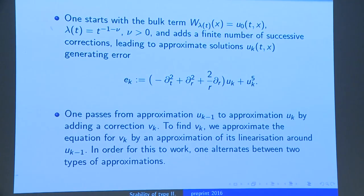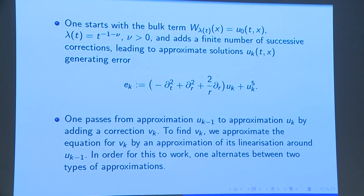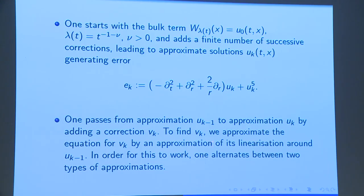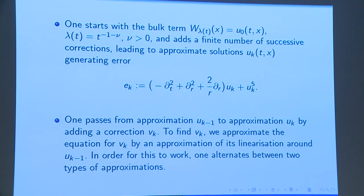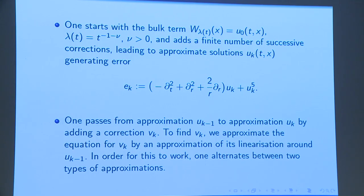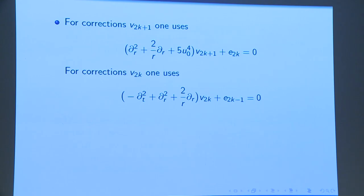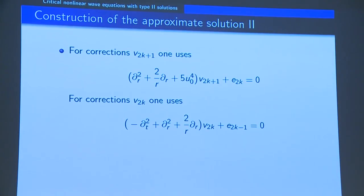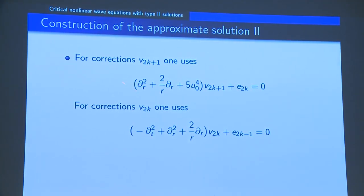I obtain approximation u_k from u_{k-1} by adding a correction term v_k, and v_k solves a corresponding wave equation obtained by linearizing around u_{k-1}. The problem is these are wave equations we don't know how to solve. We want to replace them by elliptic equations. One way is to simply forget about the time derivative. Another is to retain the time derivative but throw out the potential term, which is time-dependent — this seems very unnatural, but near the light cone the potential term actually becomes extremely small.